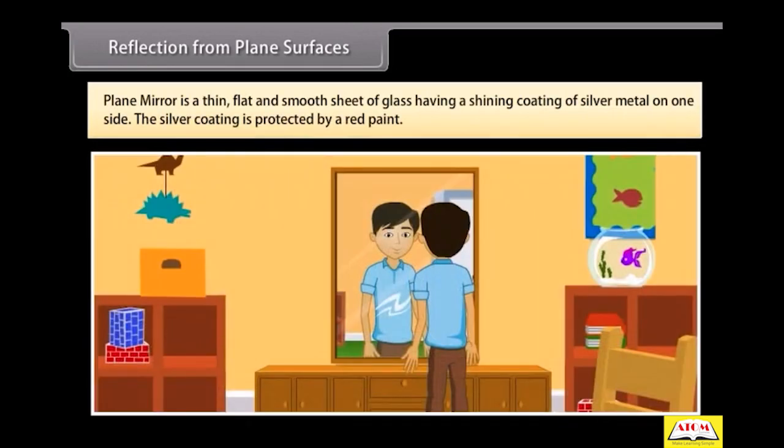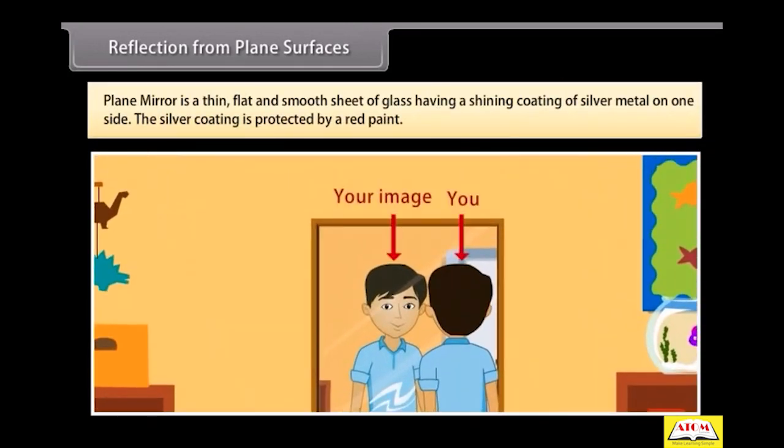Reflection from plane surfaces. A plane mirror is a thin, flat and smooth sheet of glass having a shining coating of silver metal on one side. The silver coating is protected by a red paint.